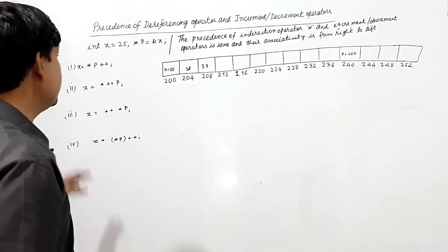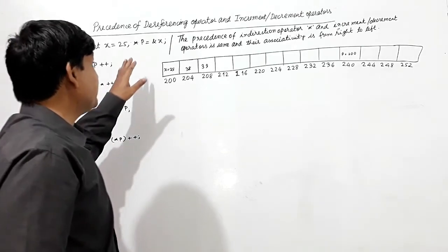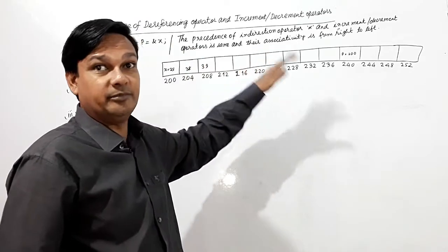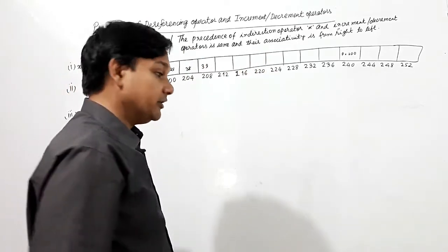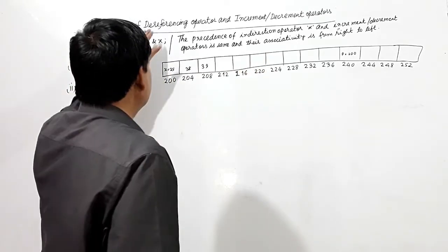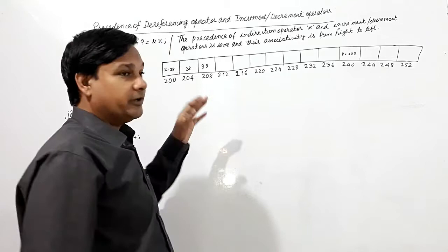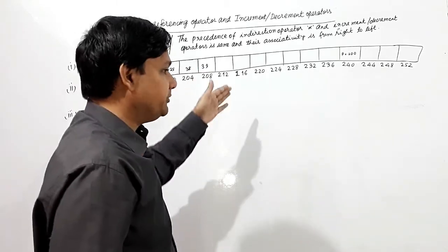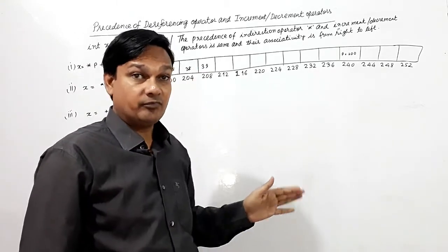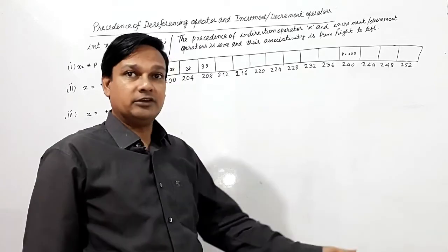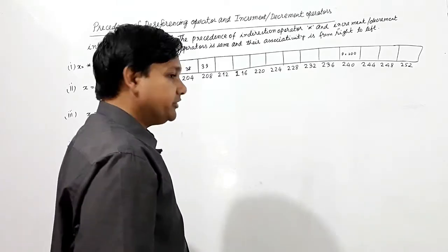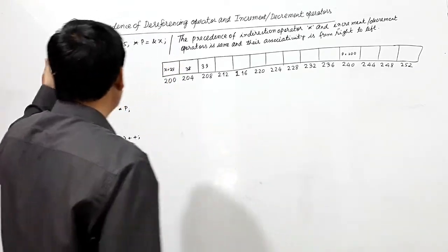Here we shall see the precedence of the de-referencing operator and increment/decrement operators. The precedence of the de-referencing operator and increment or decrement operators is the same, but the associativity is from right to left. We shall see some examples here.